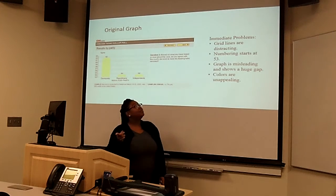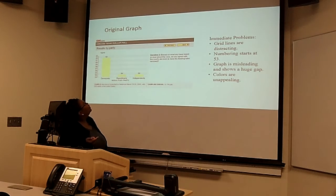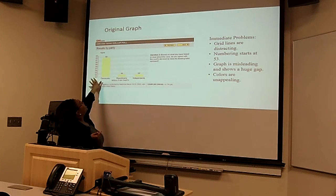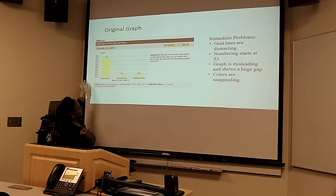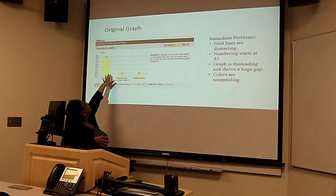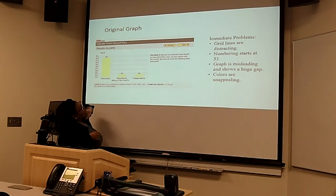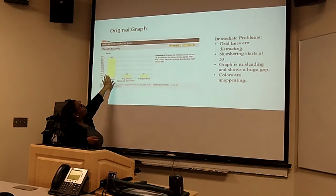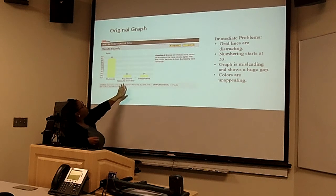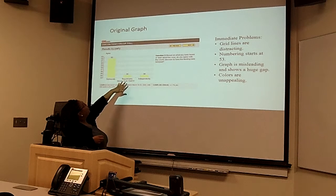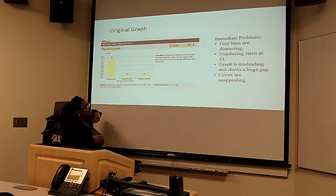This is the original graph that was created by CNN. As you can tell, there are a couple things wrong with this. For one, it started at number 53, and it doesn't tell you if this is a percentage or if this is 5,000. It also has these colors and grid lines, which make it a little distracting to understand what this is actually about. And the graph also shows a huge gap between the Democrats, the Republicans, and the Independents, which it shouldn't be that huge because from 54 to 62, you can see that it's not that big of a difference.